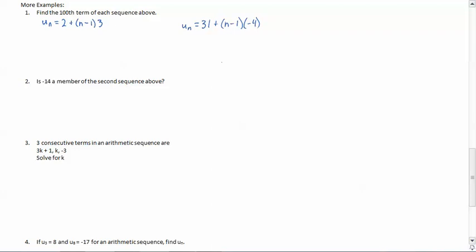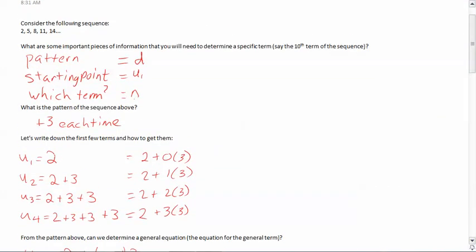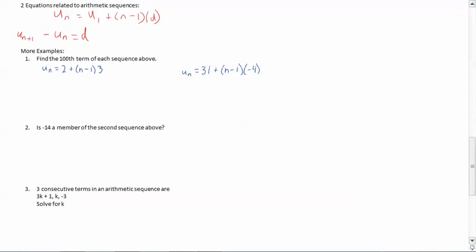So the first one here asks us to find the hundredth term of the sequences above. Now I took the liberty of just copying the sequences down from what we did earlier, so now we're just going to find the hundredth term. Now if you'll remember, back at the beginning, the term number was n. And so in our equation, if I want the hundredth term, I just need to replace n with 100. We'll leave the equations there.